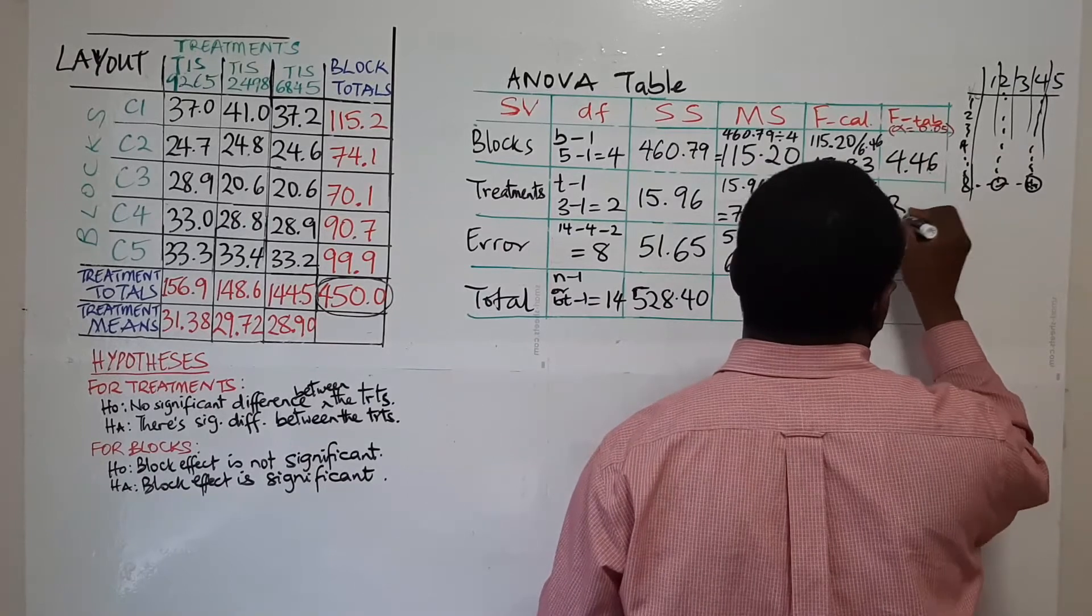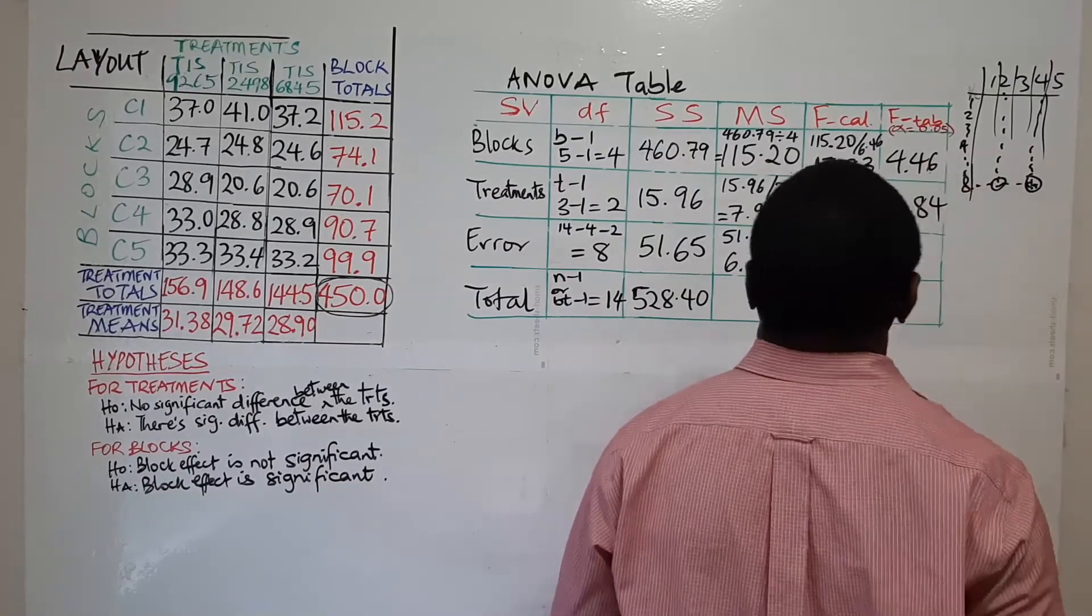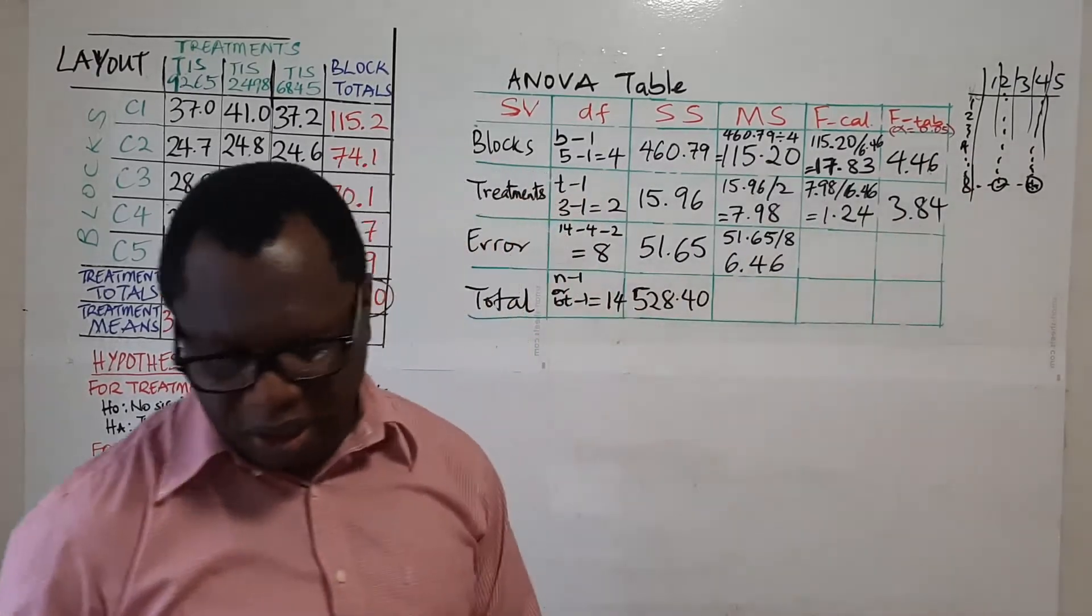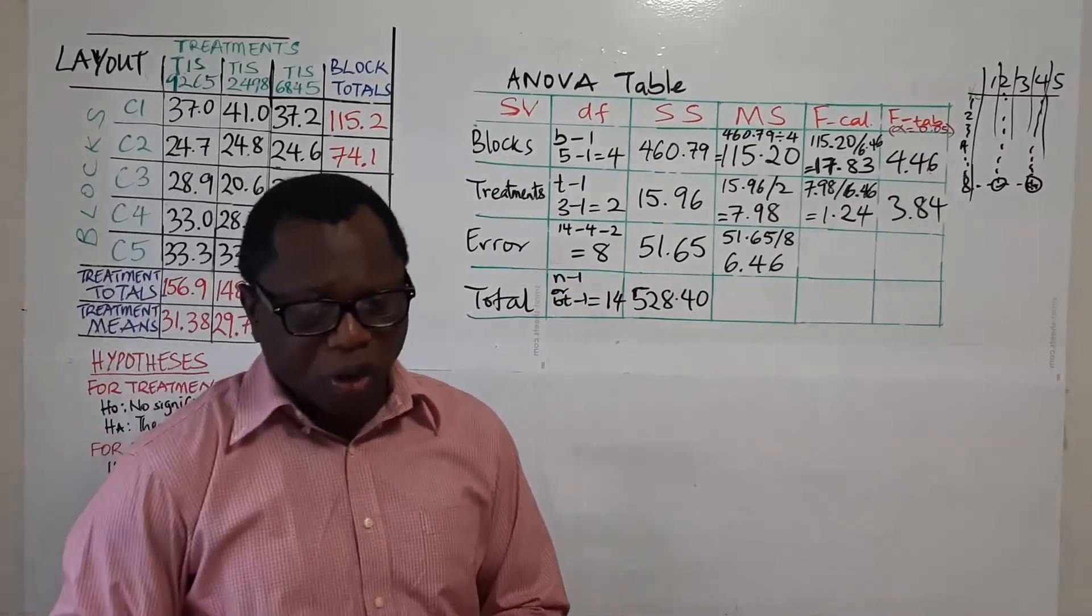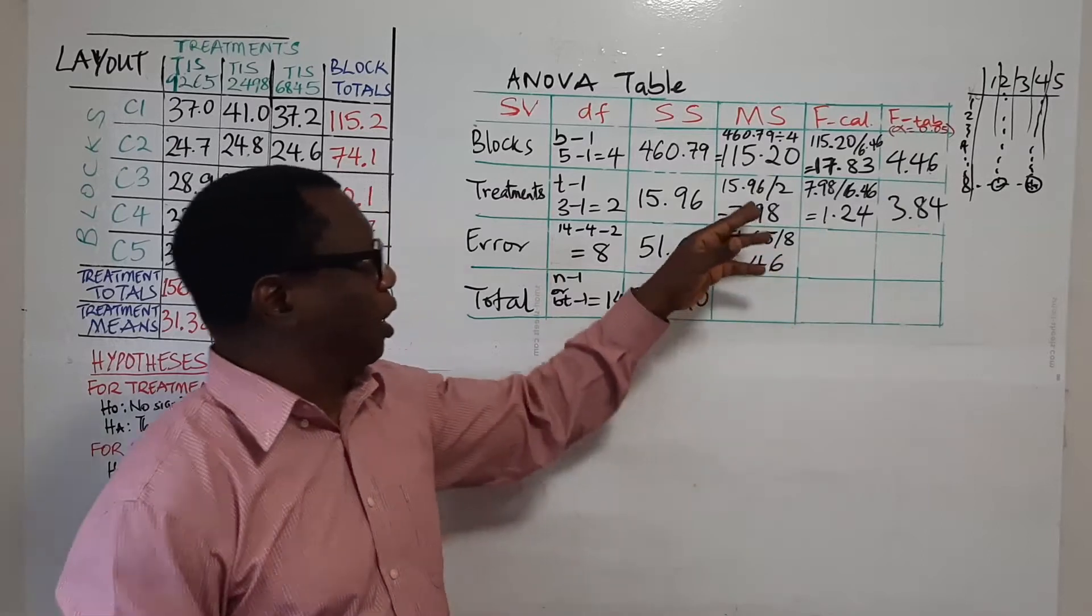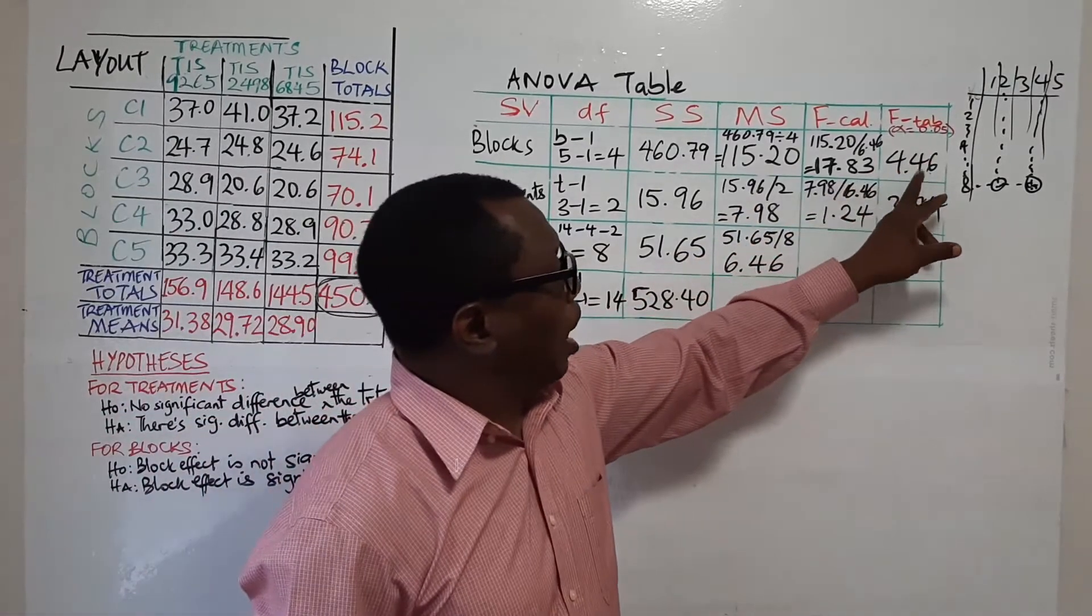4.46 is what you will get. And here, 3.84 for treatments. So that is what you get from the F-tabulated.